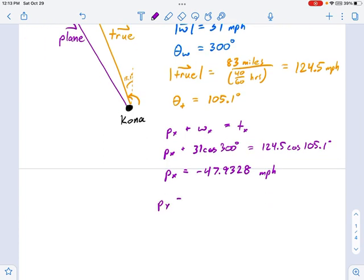Next equation, Py plus Wy equals the true y heading. So, sub in what we know. The wind vector has a magnitude of 31, and its direction is 300 degrees. We're using sine because this is the y component, the vertical component. So, Py plus 31 sine 300 equals 124.5 sine 105.1 degrees. That's the true vector.